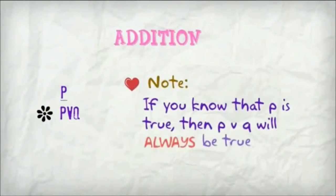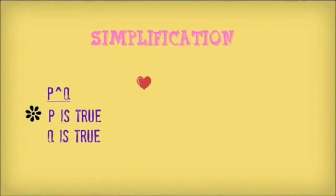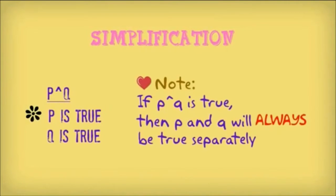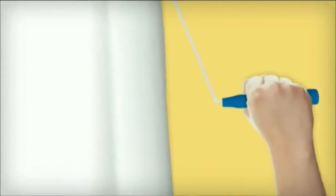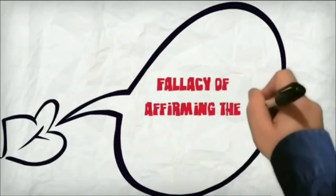The second is modus tollens. Let's check the example. If I got a good score, then my mom would give me a present. But the fact is my mom wouldn't give me a present. So we can conclude that I didn't get a good score.